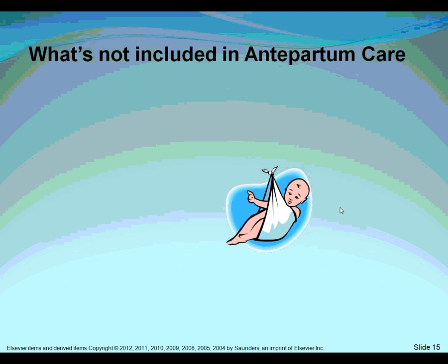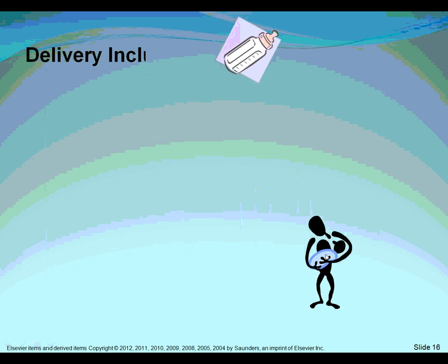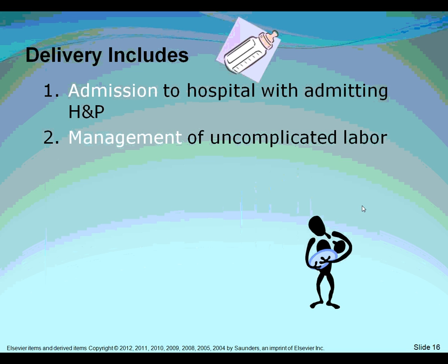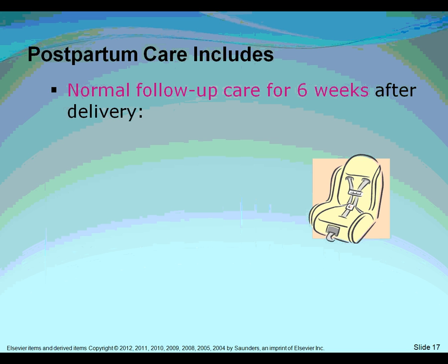Some insurance companies, especially government payers like Medicaid, generally pay between $3,000 to $5,000 to the gynecologist-obstetrician for the delivery and birth of a baby. There are only a few services that can be reported separately — specifically, services not related to antepartum care. For example, if a pregnant woman comes in with a cold, the physician can charge separately for that visit.